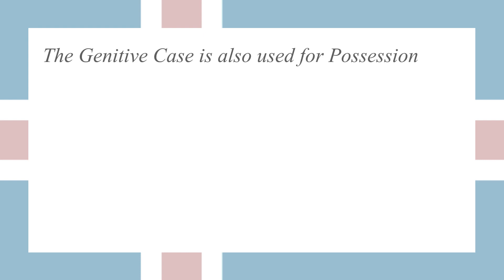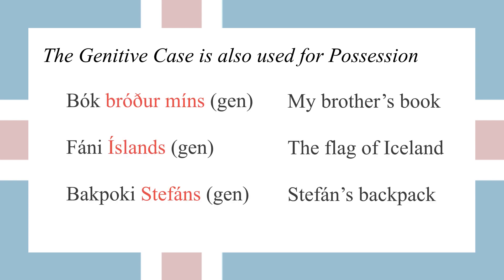The last thing you need to know about cases, for the sake of this video, is that the genitive case is also used for possession. So 'bok broder' — where broder is in genitive — means 'my brother's book.' 'Fauni Island' means 'the flag of Iceland' or 'Iceland's flag.' And 'bakpoki Stefan's' means 'Stefan's backpack.'